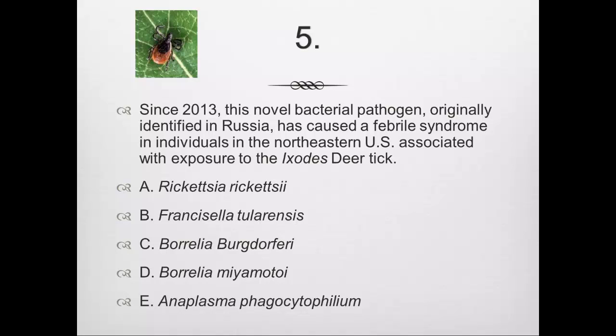Question number 5: Since 2013, this novel bacterial pathogen originally identified in Russia has caused a febrile syndrome in individuals in the northeastern U.S. associated with exposure to the Ixodes deer tick. Is it A, Rickettsia rickettsii; B, Francisella tularensis; C, Borrelia burgdorferi; D, Borrelia miyamotoi; or E, Anaplasma phagocytophilum?